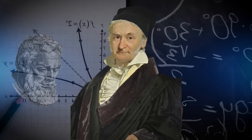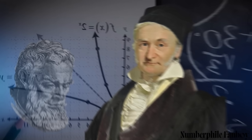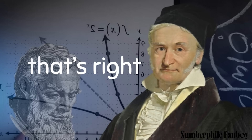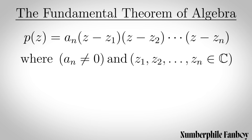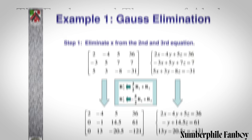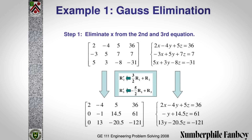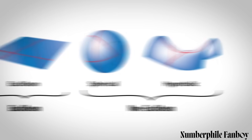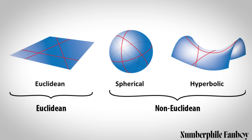Leonhard Euler was a Swiss mathematician and physicist who essentially invented most of modern mathematical notation. Carl Friedrich Gauss was known as the prince of mathematics and was famous for the fundamental theorem of algebra, Gaussian elimination, and his early works in non-Euclidean geometry.